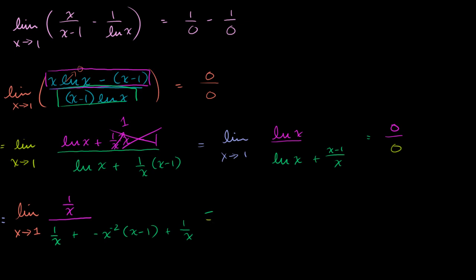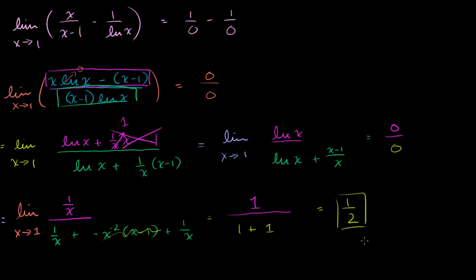Evaluating at x equals 1: the numerator is 1 over 1, which is 1. In the denominator, we get 1 plus negative 1 squared times 1 minus 1, which is 0, so that term cancels, plus another 1 over 1. So the denominator equals 1 plus 1, giving 2. The limit equals 1 over 2, which is one half. Using L'Hôpital's rule twice, we solved a limit that initially didn't look like 0 over 0 by first combining the terms algebraically.